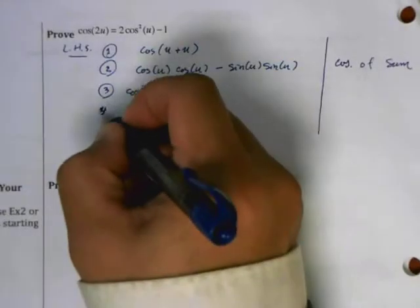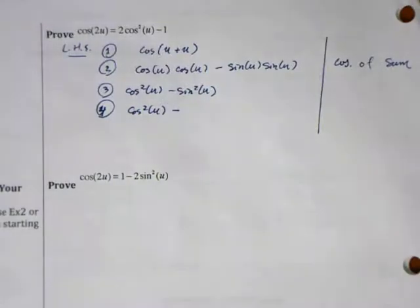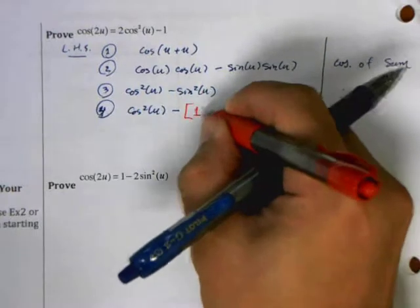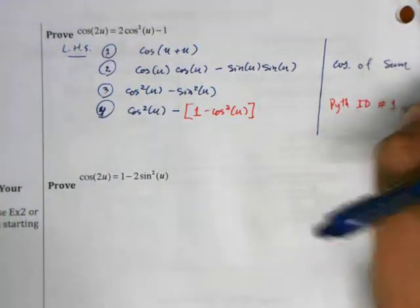So this is where we're going to apply one of the original Pythagorean identities. Step four: cosine squared u minus, and instead of writing sine squared u, I'm going to convert this into one minus cosine squared u. So this is Pythagorean identity number one, the original Pythagorean identity.